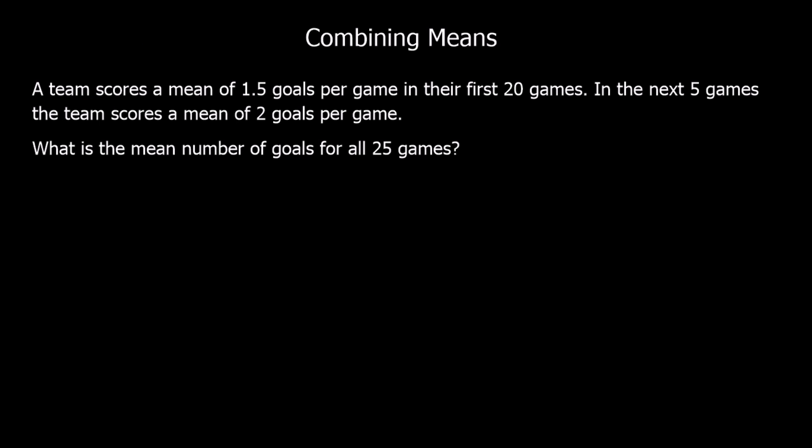And finally, pause the video, give this one a go, and press play when you're ready to go through. So we've got a team scoring 1.5 goals per game in the first 20 games. And in the next five games, they're getting two goals per game. What is the mean number for all 25 games?